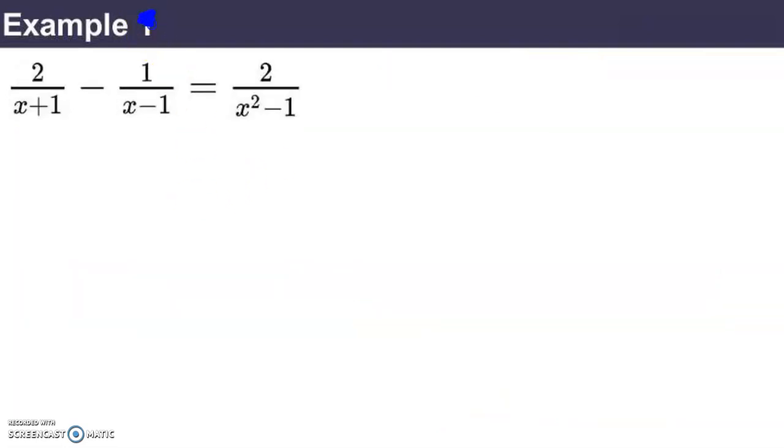Here's another example that we'll call example 2. Let's see if we can solve 2 over x plus 1 minus 1 over x minus 1 equals 2 over x squared minus 1. In looking for a least common denominator, it might help to factor the denominators first. Now, x plus 1 and x minus 1 are unfactorable, but x squared minus 1 can be factored. It's a difference of perfect squares. We could write that as x plus 1 times x minus 1. And what I hope that helps you see is that x plus 1 times x minus 1 would be a great common denominator because each of the other denominators are factors of that expression already. So, let's call that our LCD, x plus 1 times x minus 1.